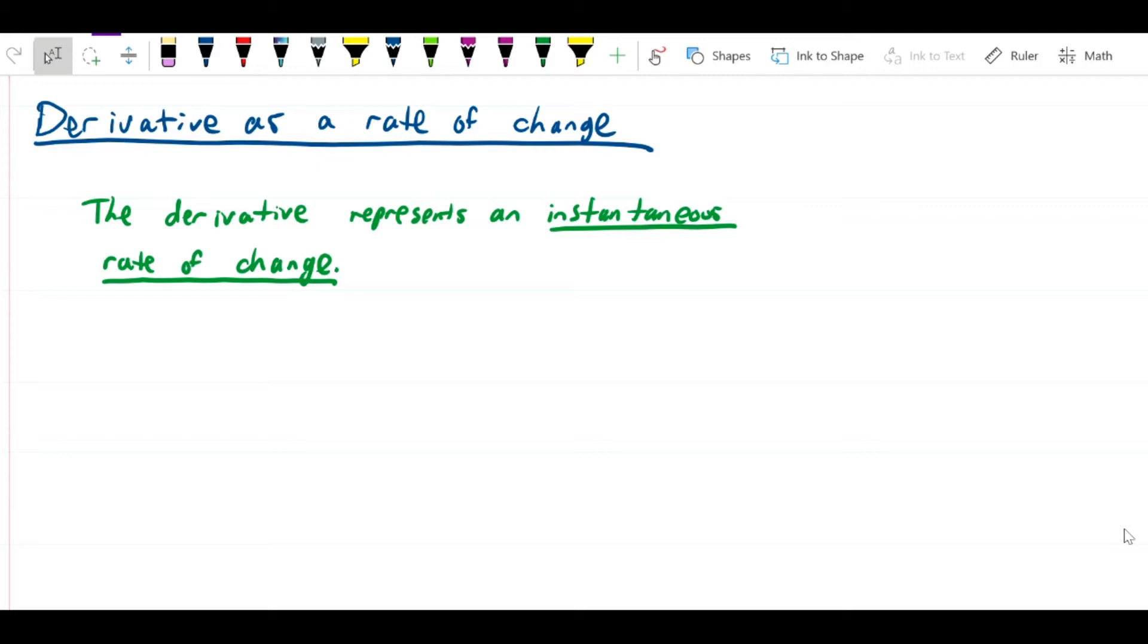You can think of a derivative as the instantaneous rate of change of some quantity. We can talk about that purely in the abstract, but perhaps the easiest way to envision it is through motion problems.